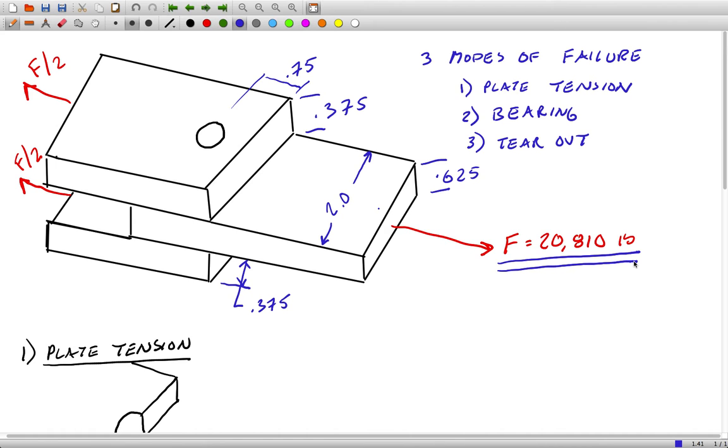There's three typical modes of failure in this kind of double shear joint. You can have failure from tension in the plate itself.